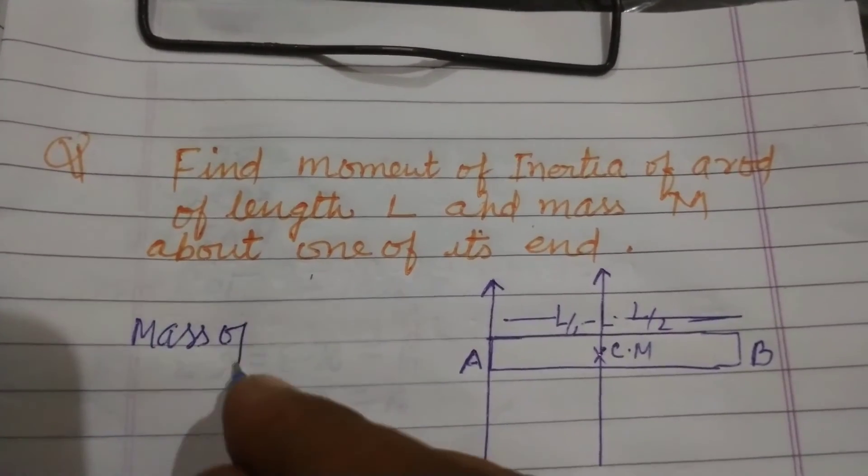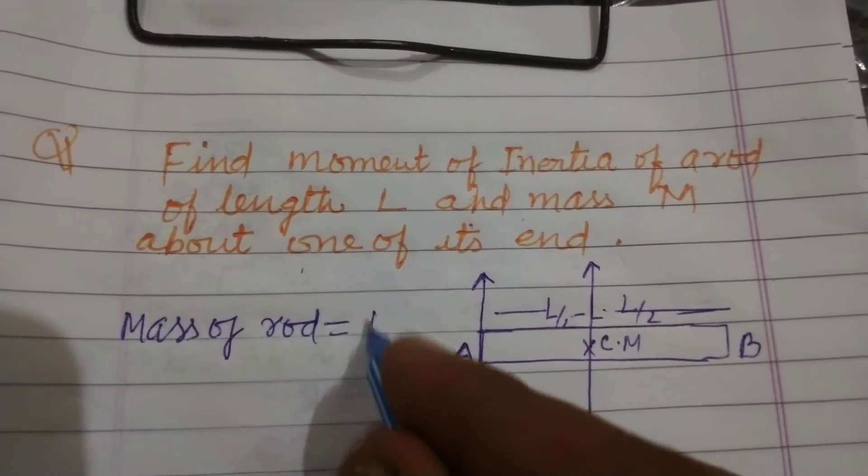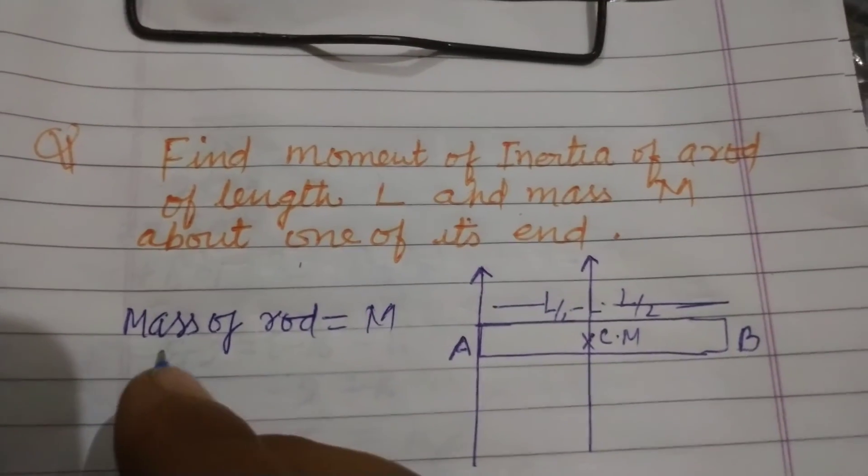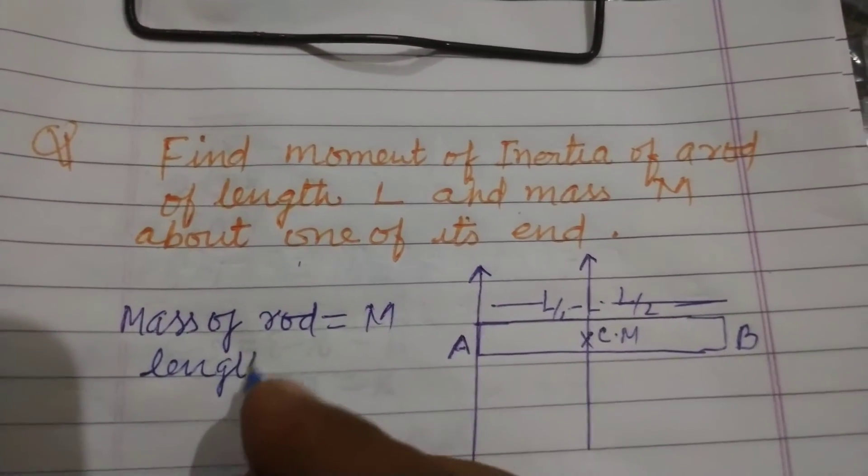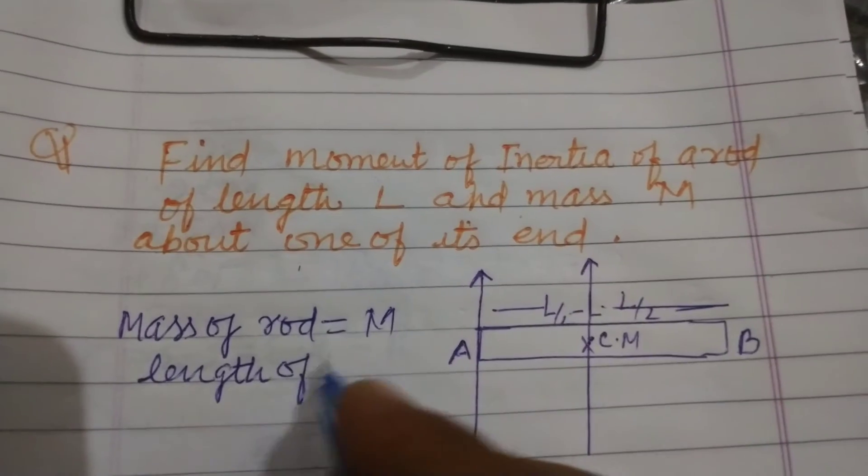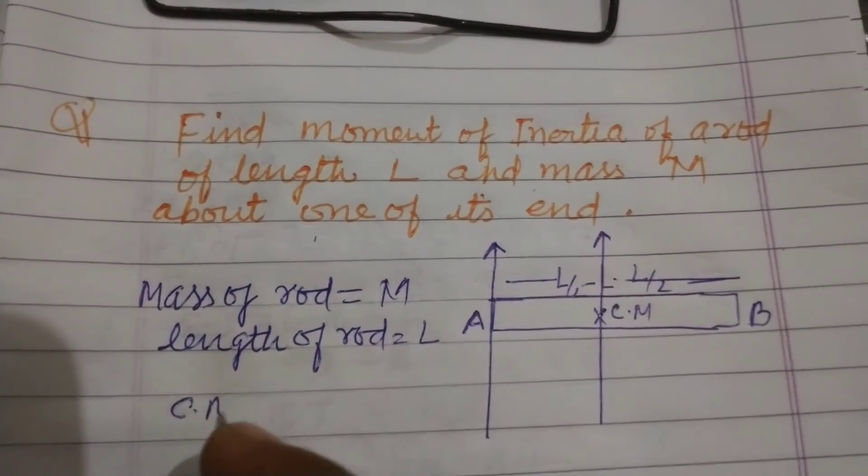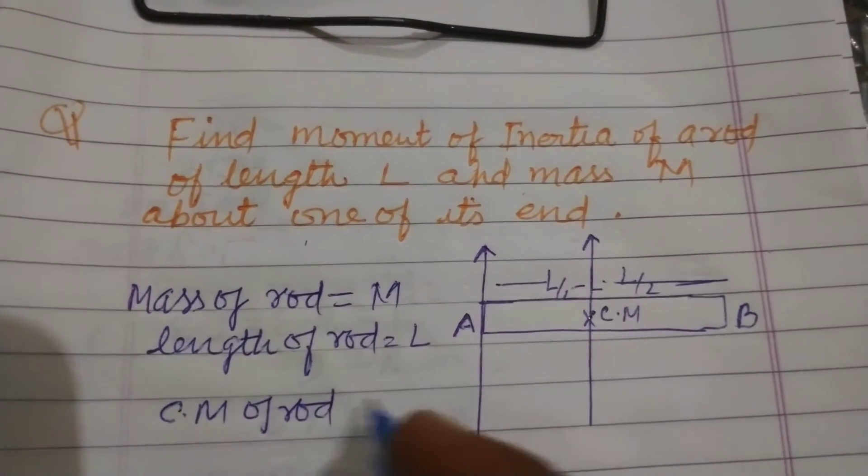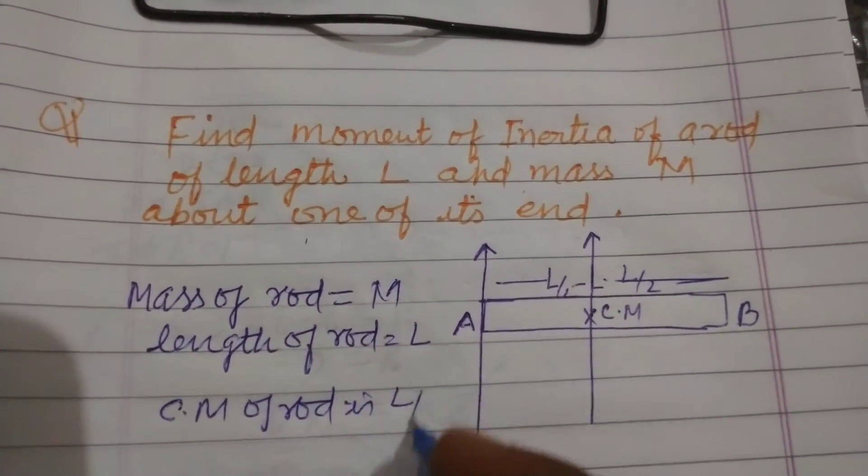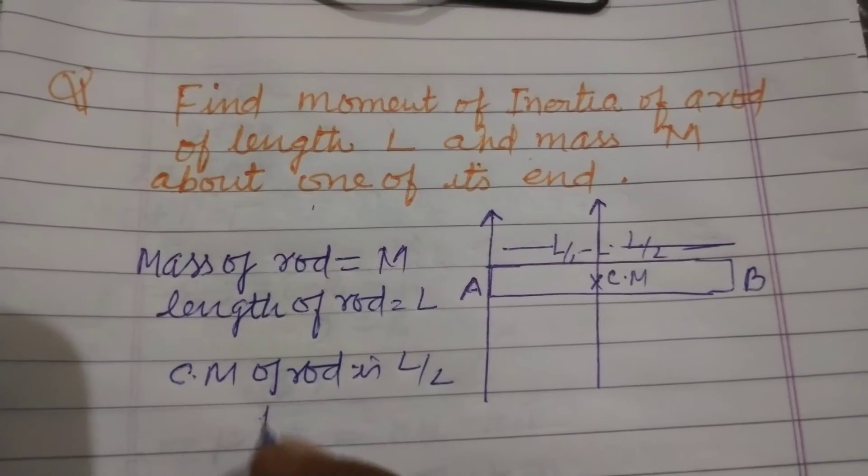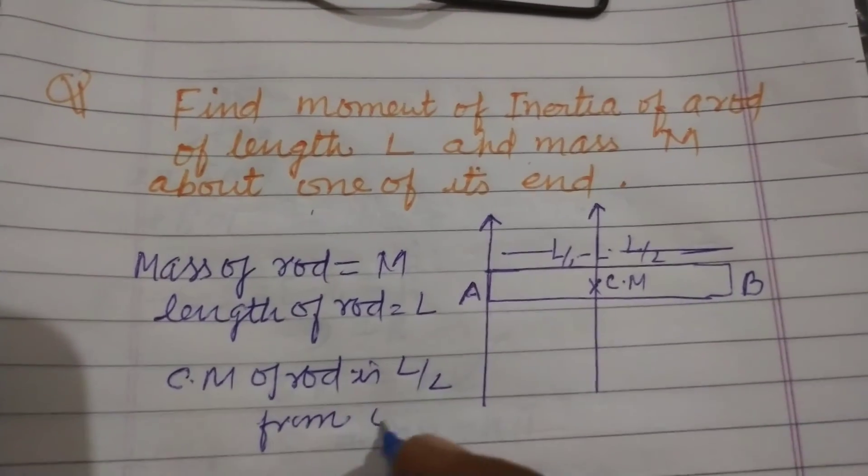So mass of the rod is equal to M. Length of the rod here is L. Center of mass of rod is L/2 from one of the ends.